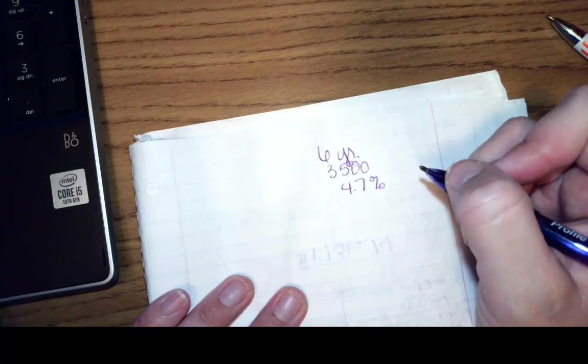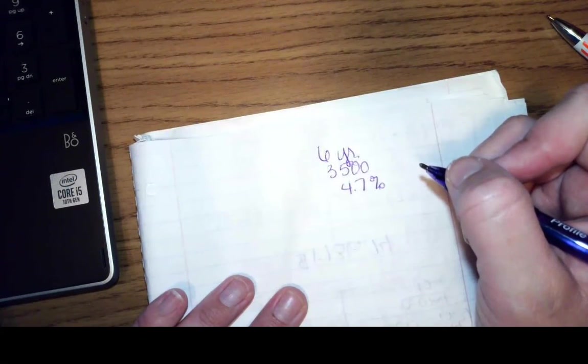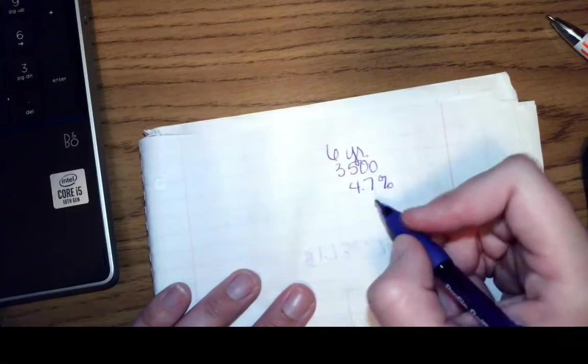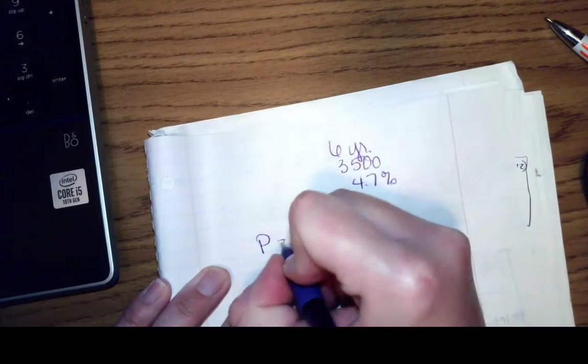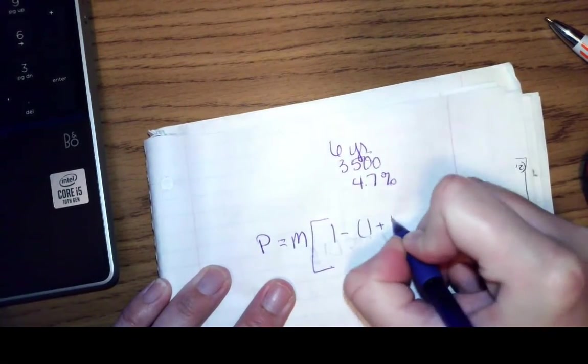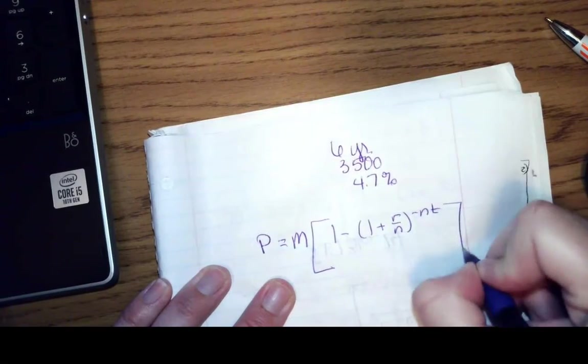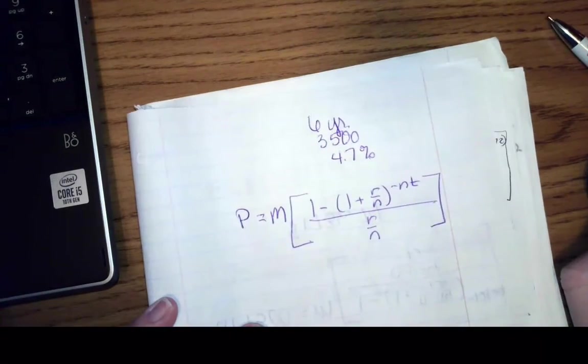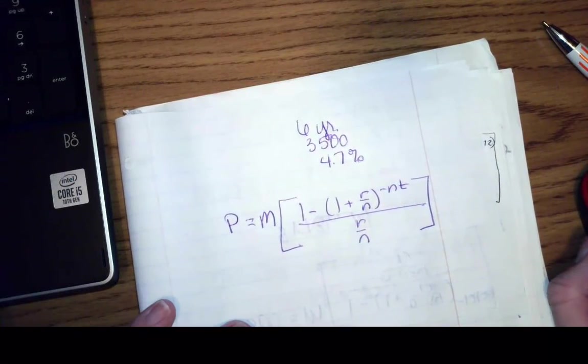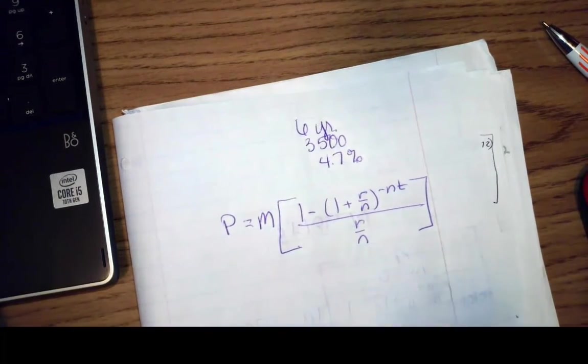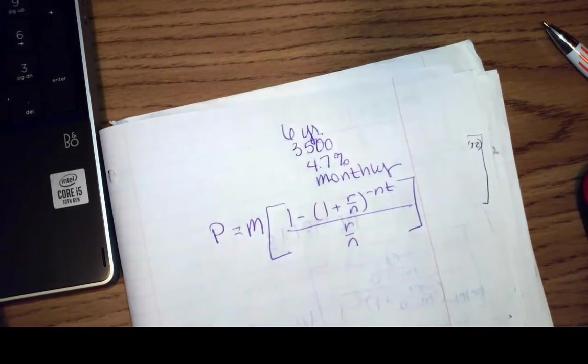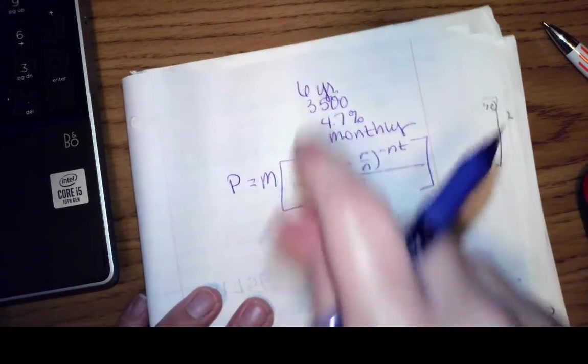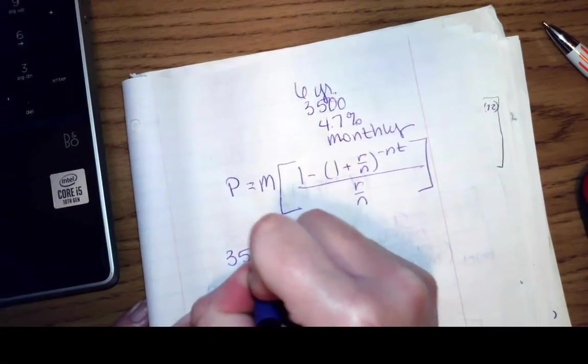It's not telling me how often to compound, so we'll figure it out. So 4.7%. So I am going to use P equals M times 1 minus 1 plus R over N raised to the negative NT all over R over N. When I start subbing these values in, it says monthly payment, so this is going to be monthly. It says monthly payment, so we're doing this monthly. My present value is I want to take out a $3,500 loan.